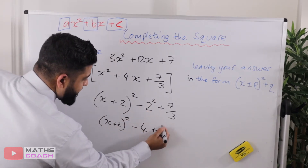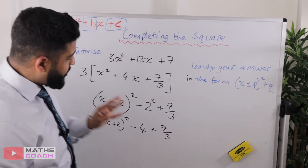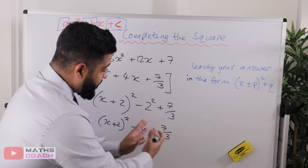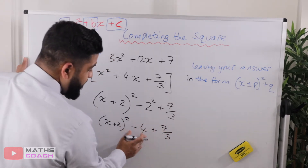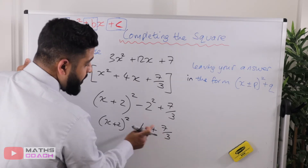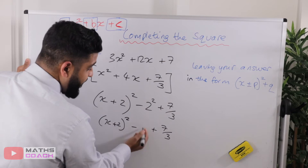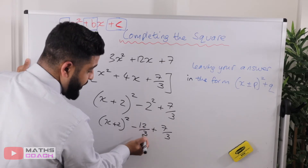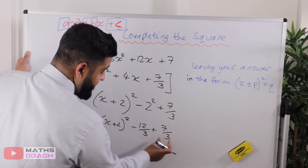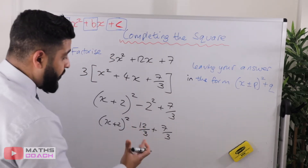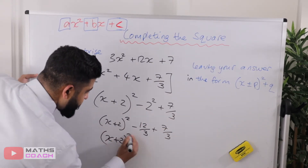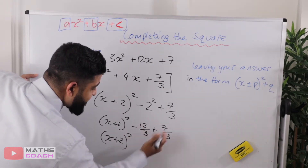That can be written and simplified as minus 4 plus 7 over 3. Once again, we need to make 4 into a fraction so that we can add these two fractions together. We want that fraction to have a denominator of 3, so instead of writing 4, we write 12 over 3 — since 12 divided by 3 is 4. They now have the same denominator, so we can collect them together.